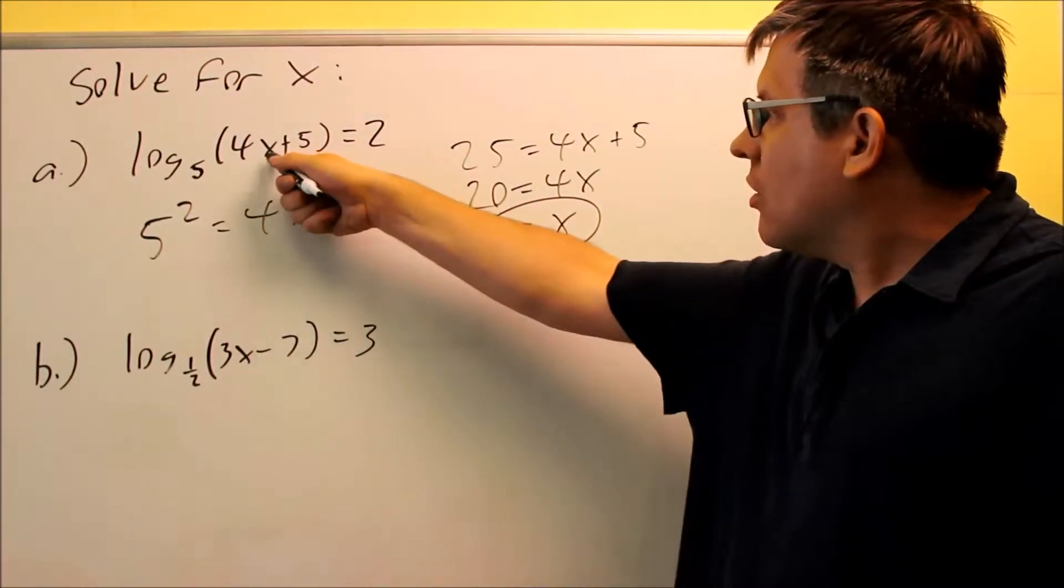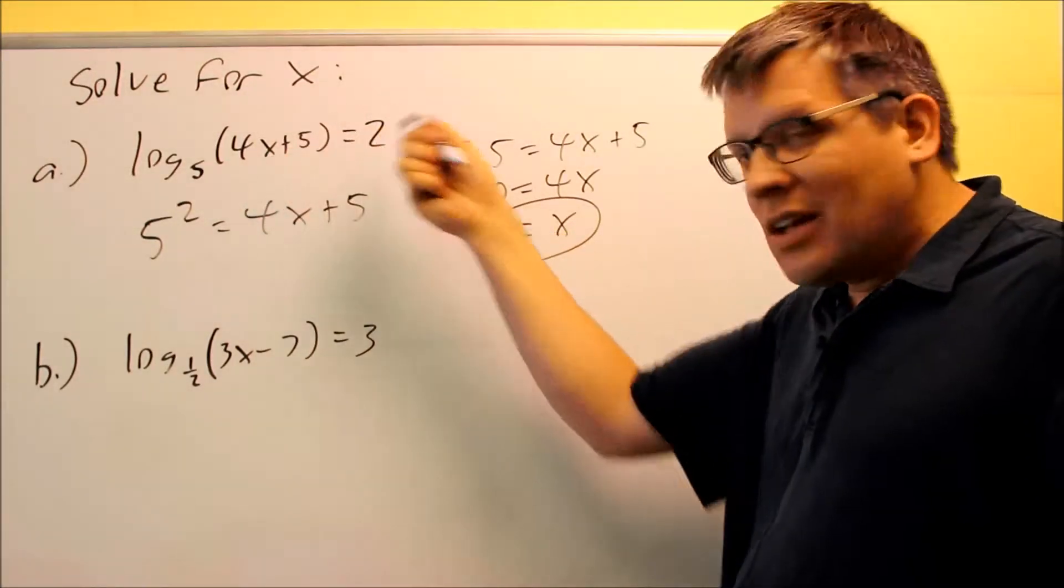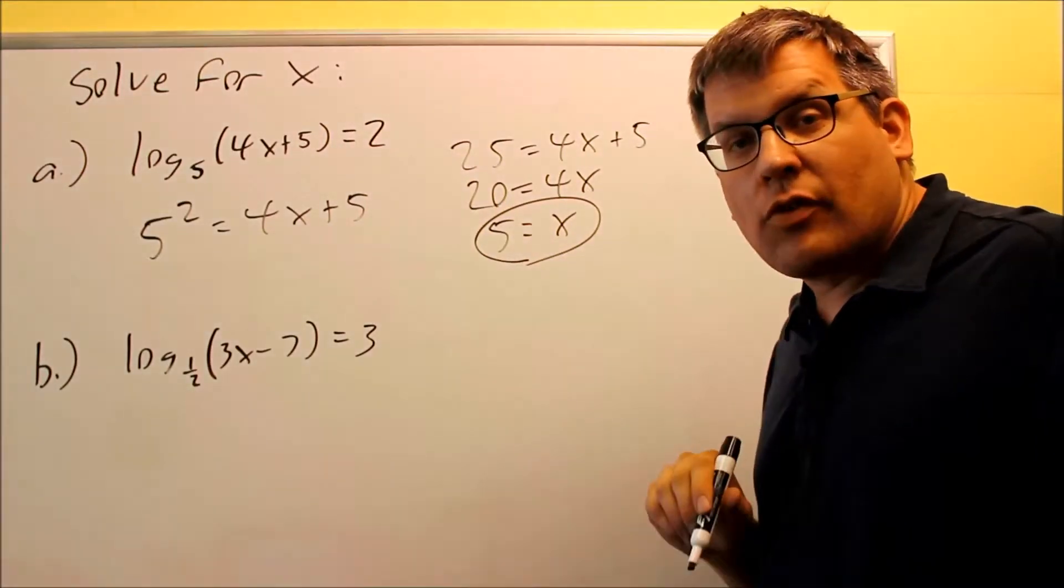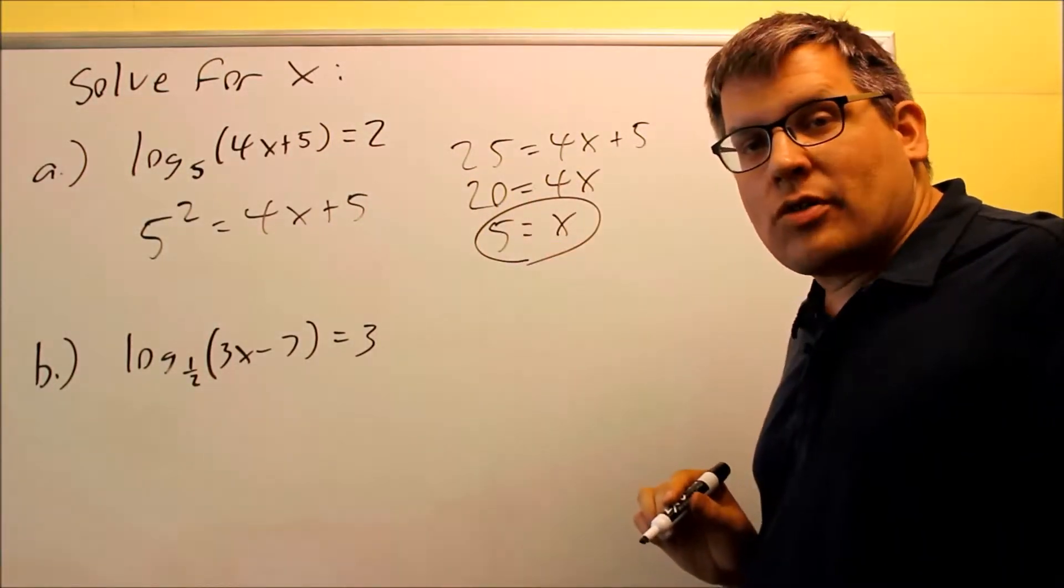If I put 5 back in here, I get 25 inside there, that's perfectly fine, I'm not taking a log of a negative number, so therefore that would be my single answer.